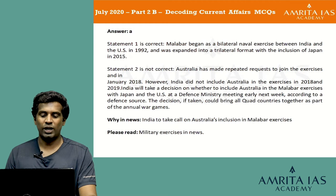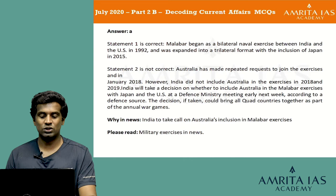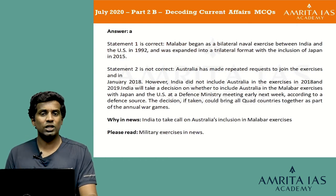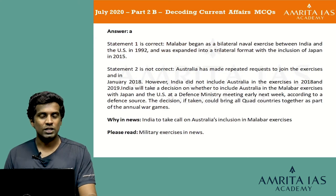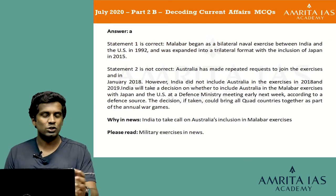Statement 1 is correct — Malabar began as a bilateral naval exercise between India and the US in 1992 and was expanded into a trilateral format with the inclusion of Japan in 2015. Statement 2 is not correct because Australia has made repeated requests to join the exercises but India has not yet decided. India was to take a decision on whether to include Australia at a defense ministry meeting. If taken, that decision would bring all quad countries — India, USA, Japan and Australia — together as part of the annual war games.